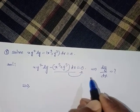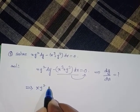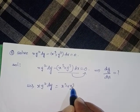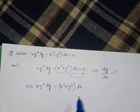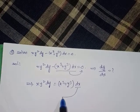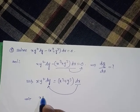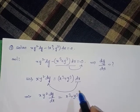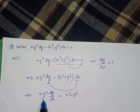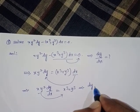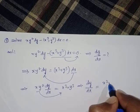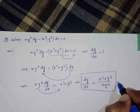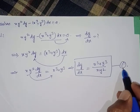Transfer terms so that x·y²dy is on the right-hand side, making the sign positive, so x³ + y³ dx moves over. We need dy/dx, so transfer: dy/dx = (x³ + y³) / (x·y²). This is a homogeneous function — consider it equation number one.